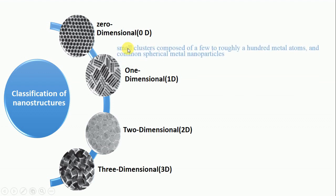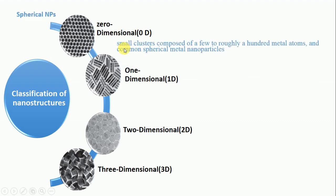Number one is spherical nanoparticles. Spherical nanoparticles are also called zero-dimensional nanoparticles. These are small clusters composed of a few to roughly 100 metal atoms and common spherical metal nanoparticles.